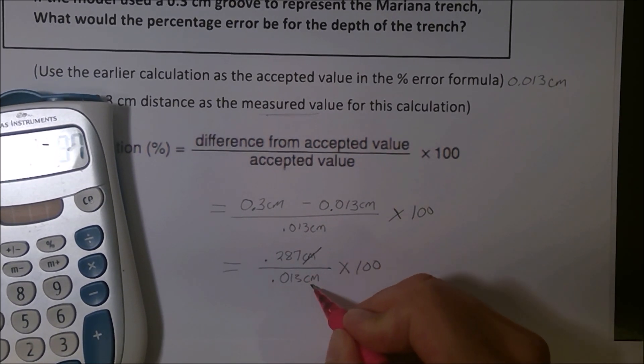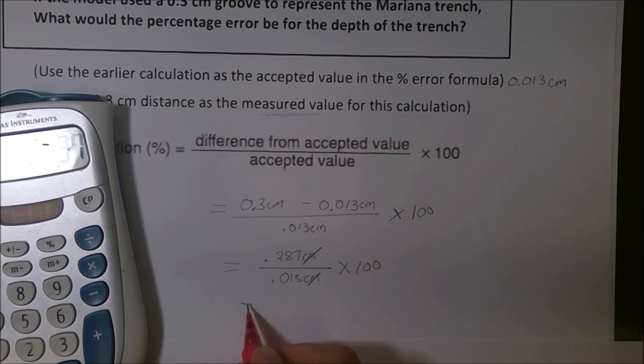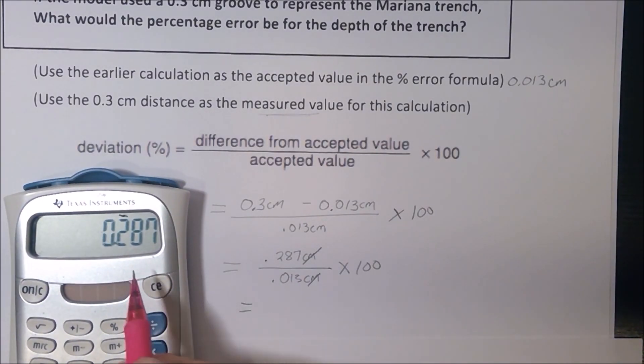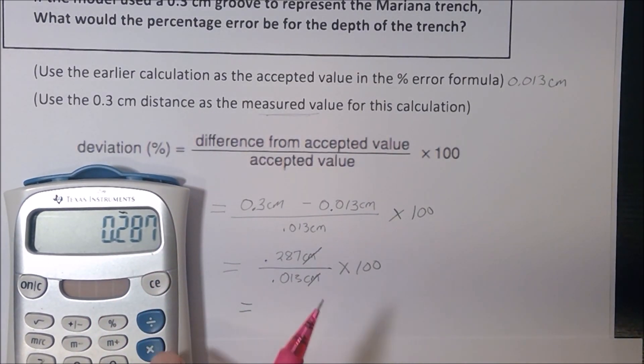Just to sort of see the numbers a little bit, my percent is going to be 0.287 centimeters over 0.013 centimeters. I'm going to multiply that by 100. Now, percent error, my units always cancel. So I'm going to wind up with percent. I still have the 0.287. So I'm dividing that by 0.013, which is the value we should have had. And I'm getting 22.07. I multiply that by 100 to get my percent.